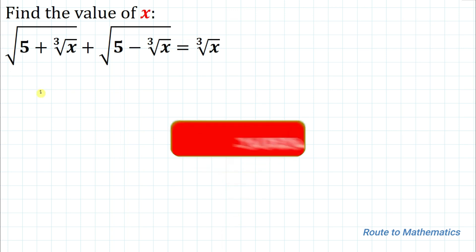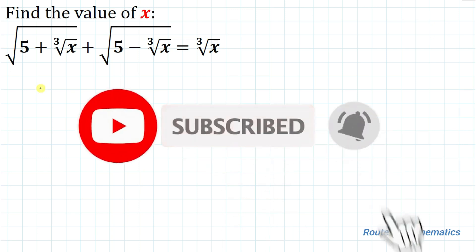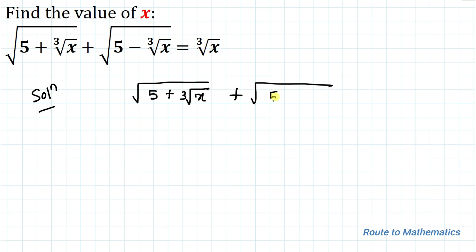Before going through the solution, please subscribe to my channel and hit the like button for more such interesting videos. Now let's start the solution. The given equation is √(5 + ∛x) + √(5 - ∛x) = ∛x.